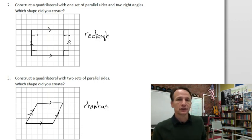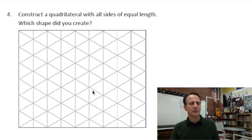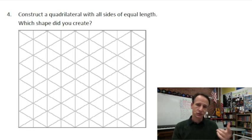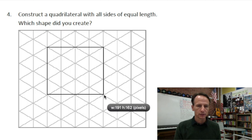Number four: construct a quadrilateral with all sides of equal length. I just drew a rhombus - I could do a rhombus for this, right? All sides equal length. But I just drew a rhombus, I don't feel like drawing another one. So I'm going to go ahead even though they've given us this triangular grid, and I'm going to draw a square.